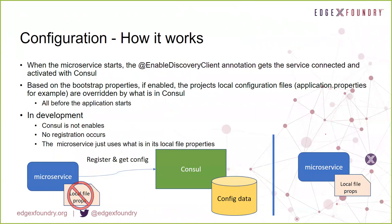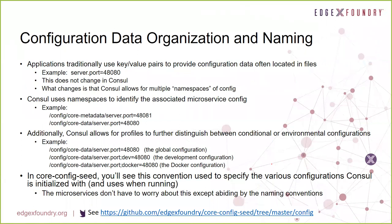How does the configuration work? When the microservice comes up, the enable-discovery-client annotation inside the main application class is what gets the service connected and activating Consul communication between the two. Based on the bootstrap properties file, if enable is turned on, the microservice knows to go to Consul and get its configuration data instead of using the local properties file. When enable is false, the microservice uses one or sometimes many different local property files where the configuration information is provided.